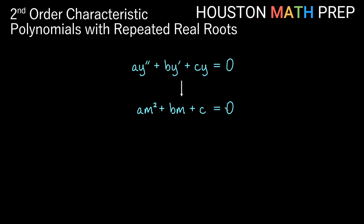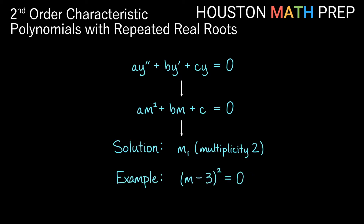For repeated real roots, we solve this quadratic and get a value for m with multiplicity 2. Multiplicity 2 means that if you factor the quadratic, you get the same factor twice — the root appears that many times. So we only get one unique solution, and that root has multiplicity 2.